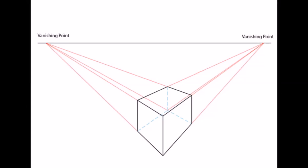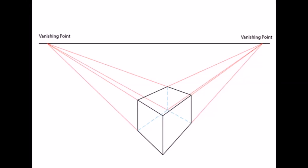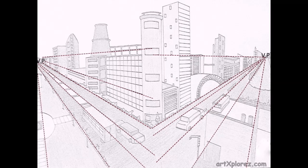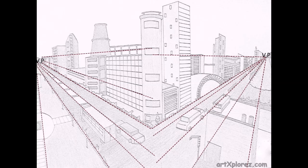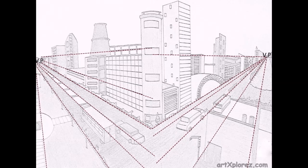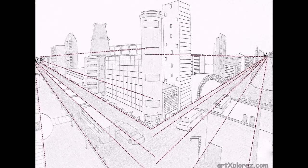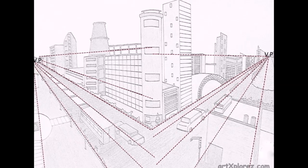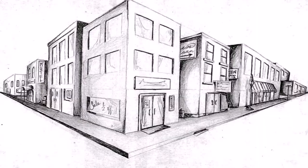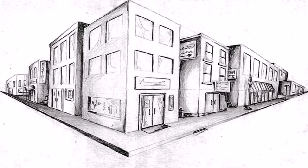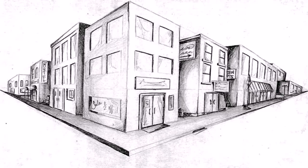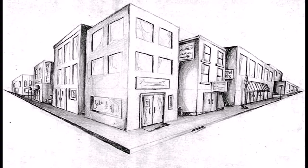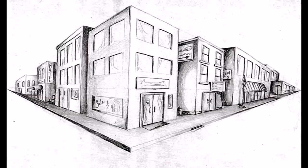An object's vertical lines do not relate to the perspective rules of the horizontal lines. By changing the vanishing points of the object, one can increase or decrease the size of the object. Angular perspective is the same as two-point perspective.